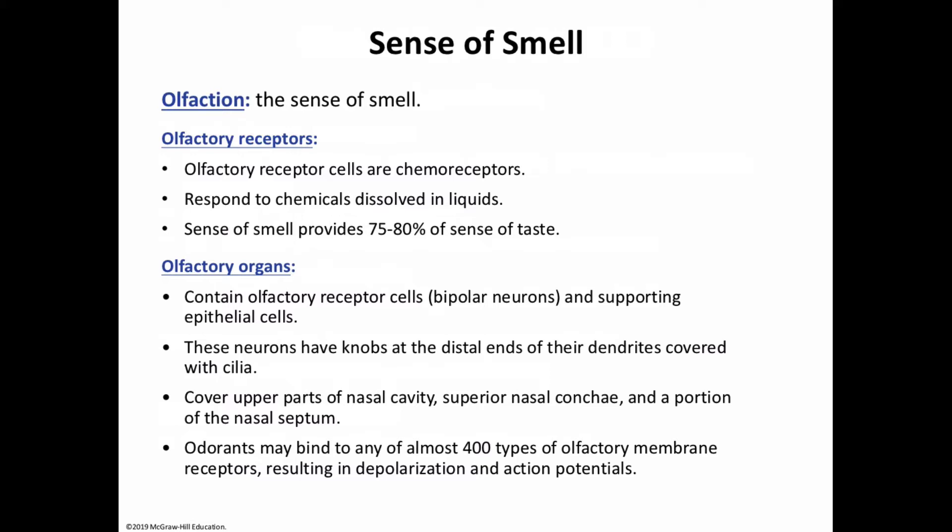The olfactory organs look like a yellowish-brown mass of epithelium covering the upper parts of the nasal cavity, superior to the nasal cavity, with a portion on the nasal septum. The olfactory organs contain olfactory receptor cells, which are bipolar neurons surrounded by supporting cells. These neurons have knobs at the distal ends of their dendrites covered with hair-like cilia.